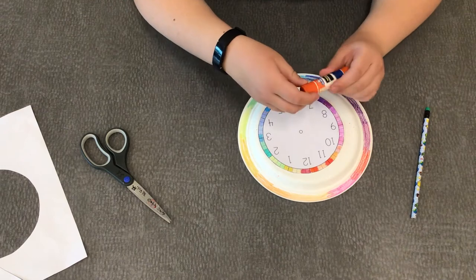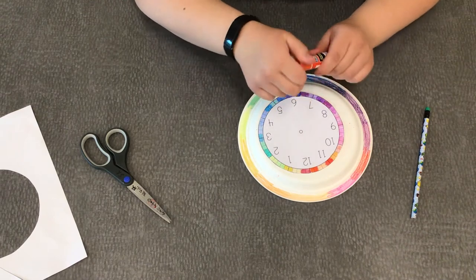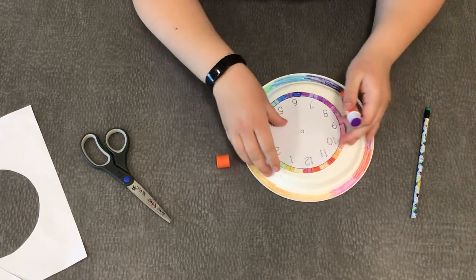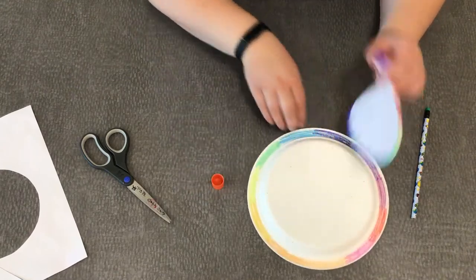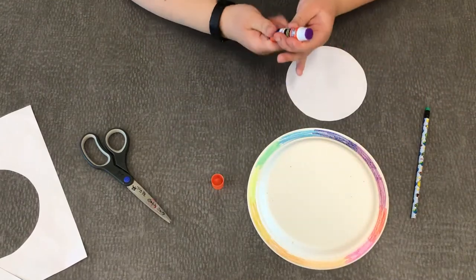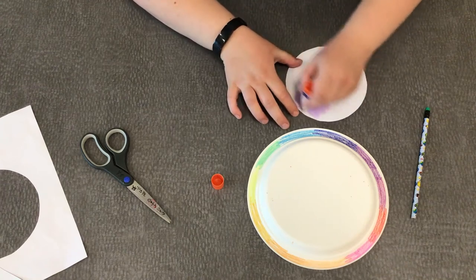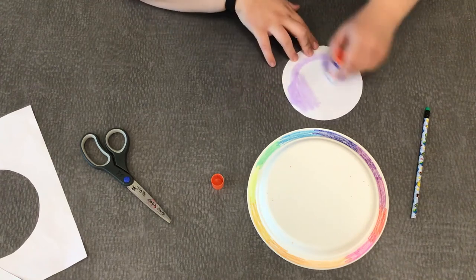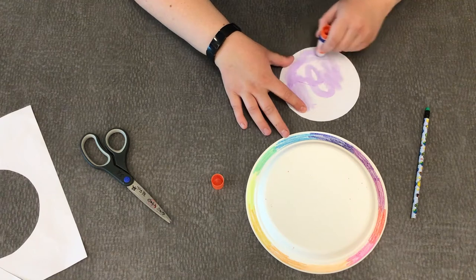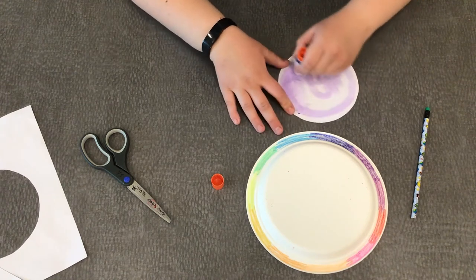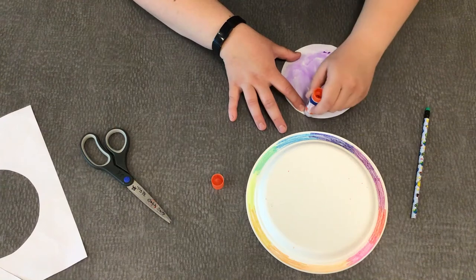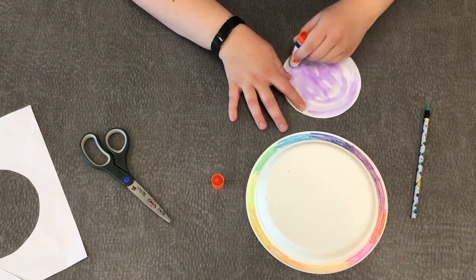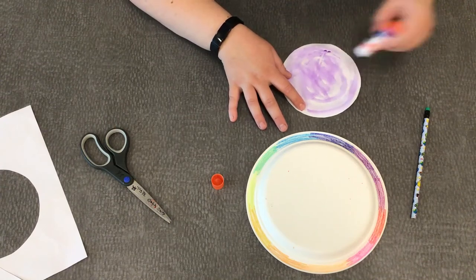Then I'm just using a washable glue stick but you can also use school glue for this, white school glue. So I'm gonna flip this over and I'm just gonna put glue on the back. And if you are using a glue stick on the paper plate I recommend just using a little bit more glue than maybe you normally would to make sure it really sticks on there.